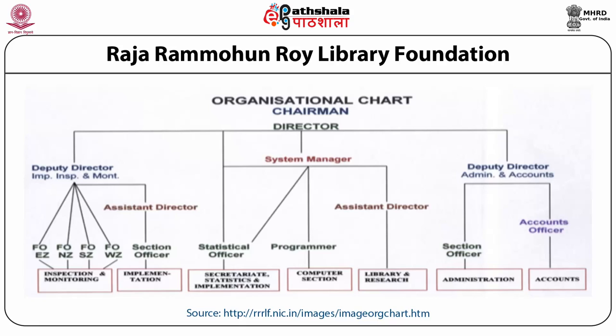Under the Deputy Director Administration and Accounts are the Section Officer Administration and Account Officer Accounts. The Foundation has various committees: the Foundation itself is the supreme policy-making body consisting of 22 members nominated by the Government of India from eminent educationists, administrators, librarians, etc. The State Library Committee (SLC) functions in each state and union territory. The Administrative Committee looks after administrative and financial affairs and has 11 members.